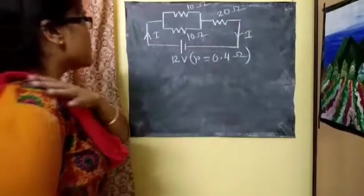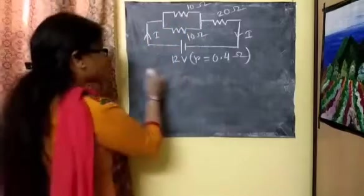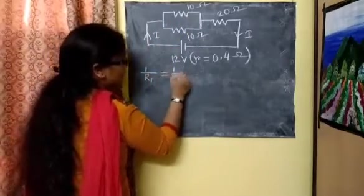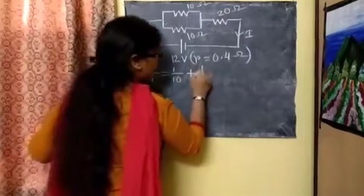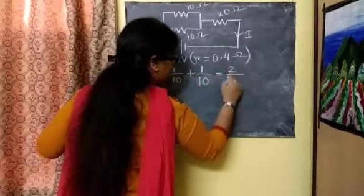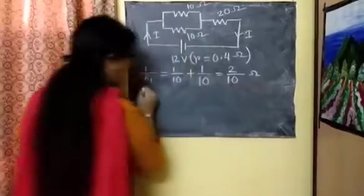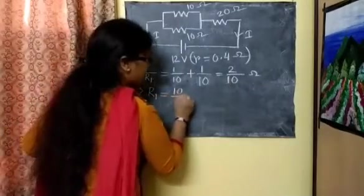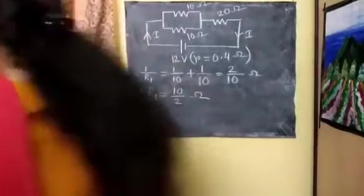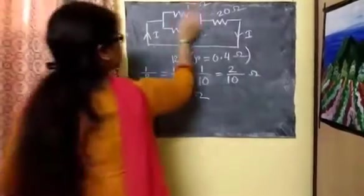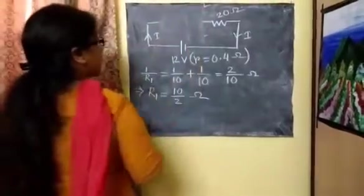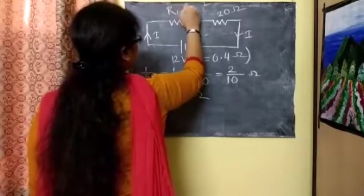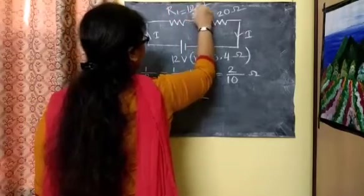First, we will find the equivalent resistance for the 10-ohm and 10-ohm parallel combination. So, 1/R1 = 1/10 + 1/10 = 2/10. Therefore, R1 = 10/2 ohm. So if I replace these two resistances by R1, the equivalent resistance R1 = 10/2 ohm.